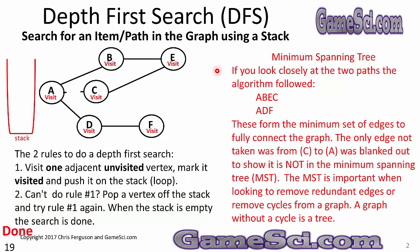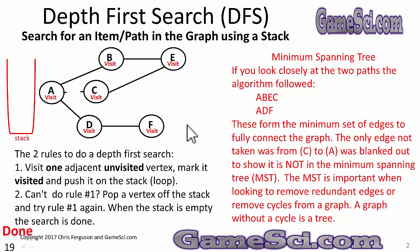The minimum spanning tree: looking at the two paths the algorithm followed — A to B to E to C, and A to D to F — these form a minimum set of edges to fully connect the graph. The only edge not taken was C to A. This is not in the minimum spanning tree, or MST. The MST is important for removing redundant edges or cycles; a graph without a cycle is a tree.